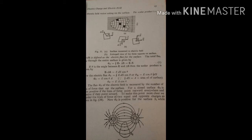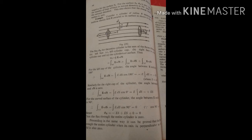For a closed surface, φ_e is taken as positive if the lines of force point outward everywhere and negative if they point inward. Considering the lines of force of two equal and opposite charges: φ_e is positive for the surface S1, while negative for the surface S2. For surface S3, φ_e is zero because the number of lines of force in the inward direction is the same as in the outward direction, showing that the charge inside the surface is zero.